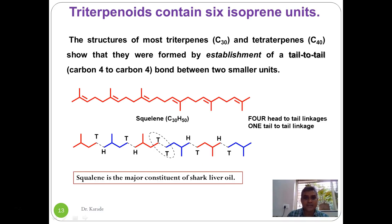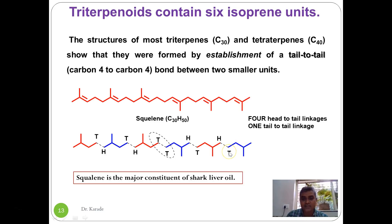Squalene is an example of a triterpenoid containing six isoprene units. These six isoprene units are joined through head-to-tail linkage throughout most of the molecule, but at the center portion there is a tail-to-tail linkage. So the isoprene rule is violated at that point, but remains valid for the rest of the molecule.